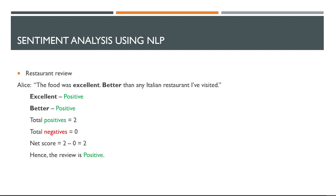This is an example of how sentiment analysis of a sentence works. Alice says: 'The food was excellent, better than any Italian restaurant I visited.' We can have a dictionary of all positive and negative words and count the score for the sentence. 'Excellent' would be one point and so would 'better,' giving us a score of positive 2 for the sentence, meaning the sentence is positive — which is correct.